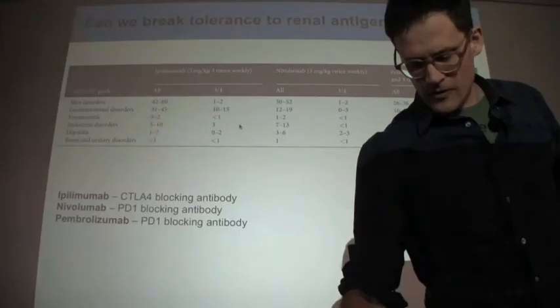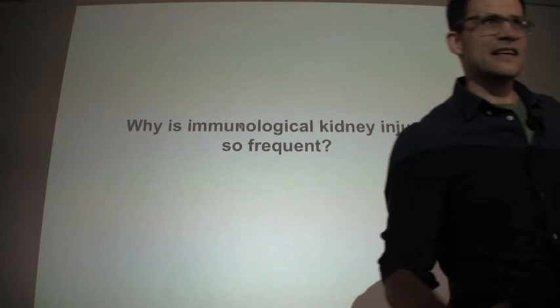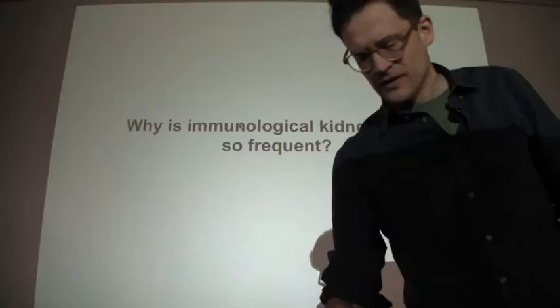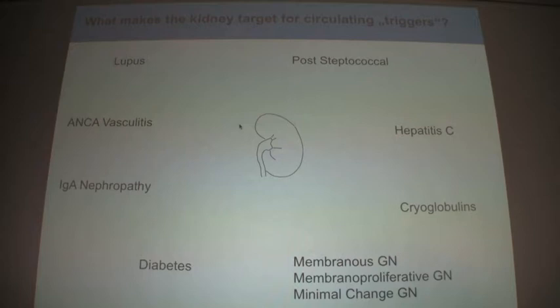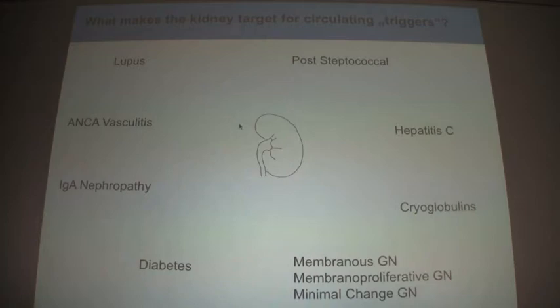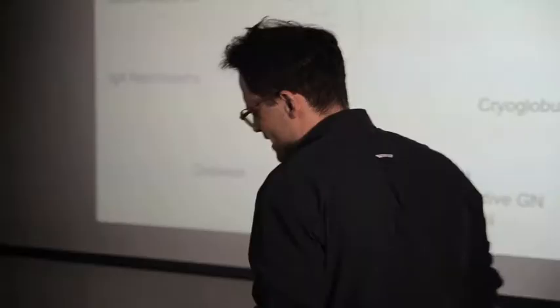Having said this, what makes the kidney the target organ in so many immune-mediated diseases? If you look at it, it's really a broad spectrum: post-streptococcal glomerulonephritis, hepatitis C, cryoglobulins, of course lupus, ANCA vasculitis, IgA nephropathy, diabetes — which is increasingly appreciated as immune-mediated — and renal diseases like membranous and focal proliferative and minimal change. Seemingly, whenever there's some kind of antibody or immune complex circulating, the kidney is a target organ.